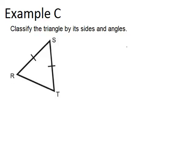For sides, we see that two sides are the same length, so that means it's isosceles based on its sides. That word isosceles means two sides the same length.